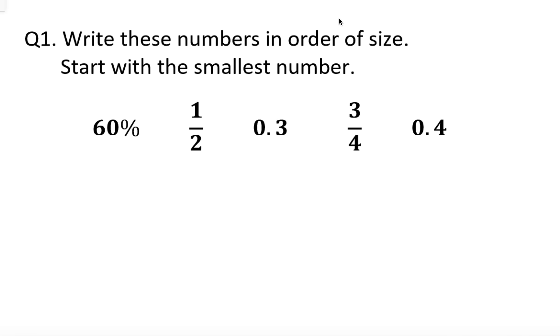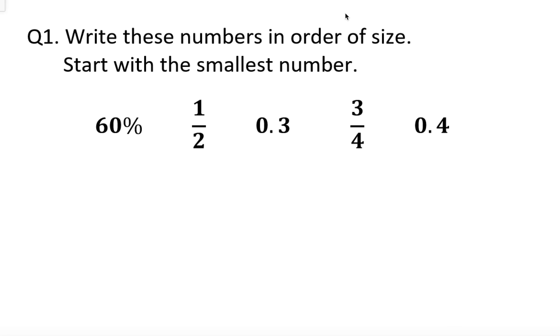Right, first question. Have a look at the question. Write these numbers in order of size. Start with the smallest number. Well if we look at the figures we've got 60%, a half, 0.3, three quarters and 0.4.